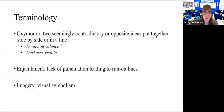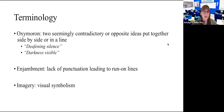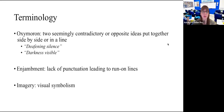We have something called an oxymoron — when there are two seemingly contradictory or opposite ideas put together side by side. For example, 'deafening silence' — something that's deafening is usually very loud. So 'loud silence' is an oxymoron because silence is typically quiet. Or 'darkness visible' — usually you can't see anything in the dark, so 'visible darkness' is an oxymoron.